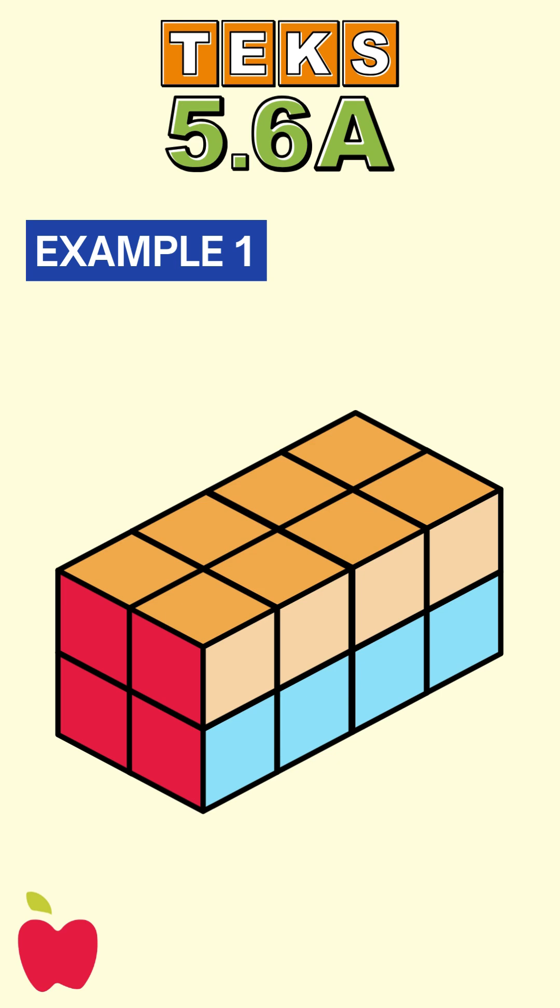In this case, there are eight unit cubes in each layer, and there are two layers, giving a total of 16 unit cubes. Therefore, the volume of the prism is 16 cubic units.